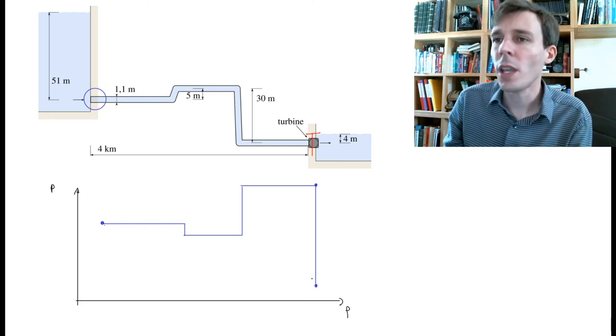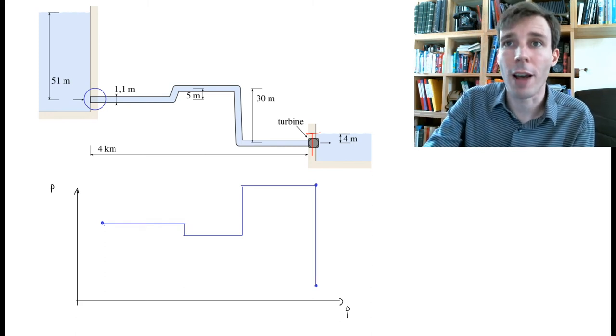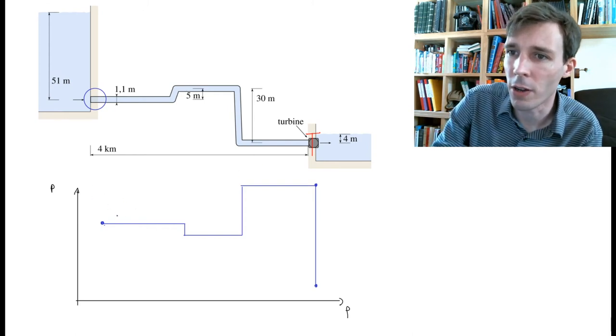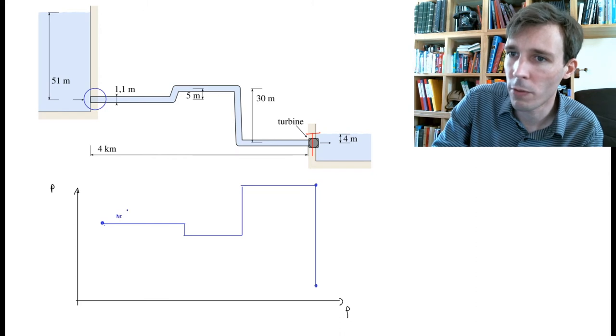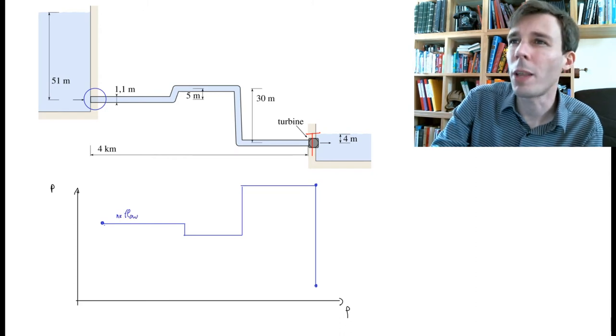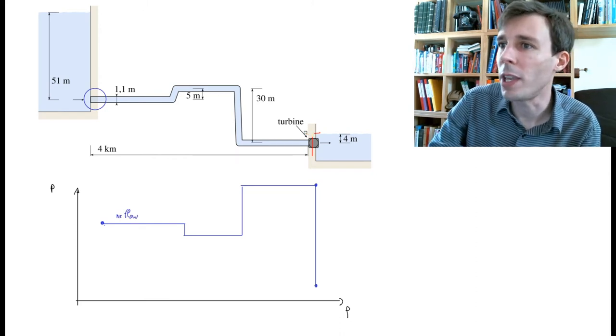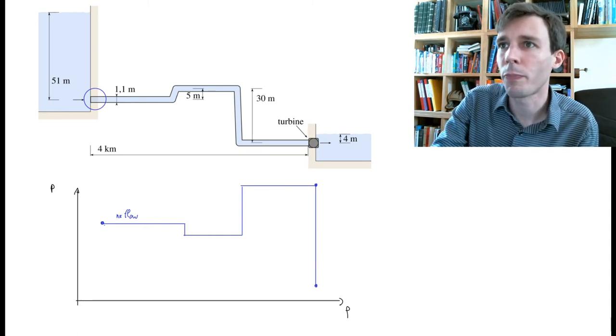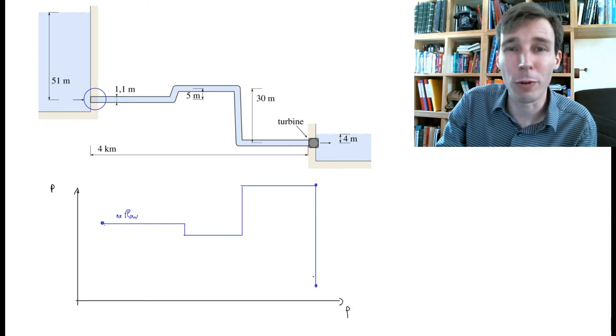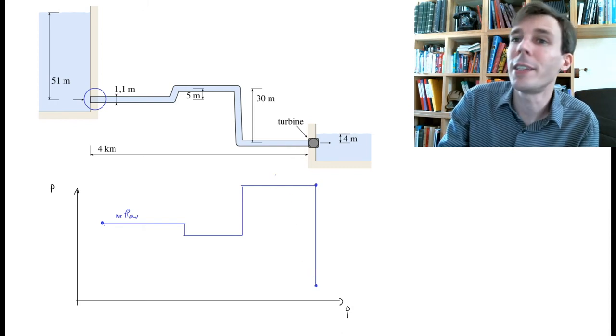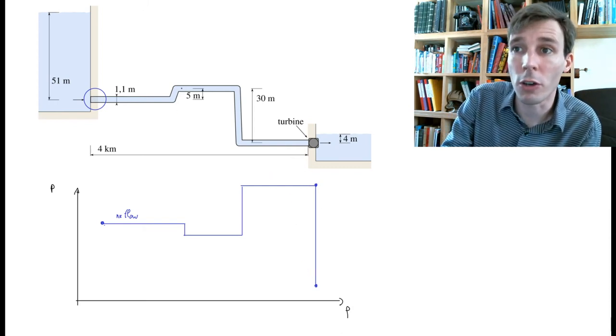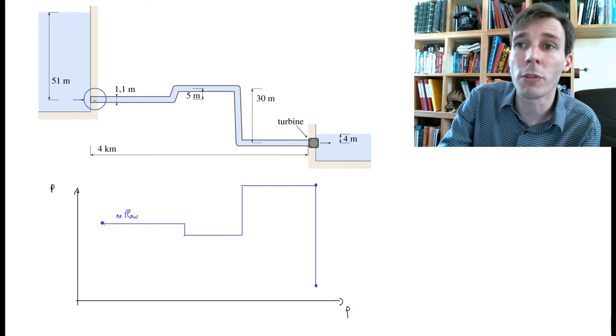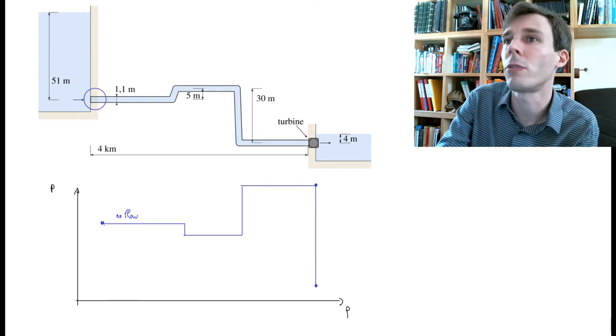Now, if we remove the valve and the water is now flowing—let me label this curve as with no flow. Let me erase this valve and let the water flow. As the water flows, the pressure drop available to the turbine will become less. This is because pressure losses occur inside the pipe at the bends, but also all along the length as friction applies.